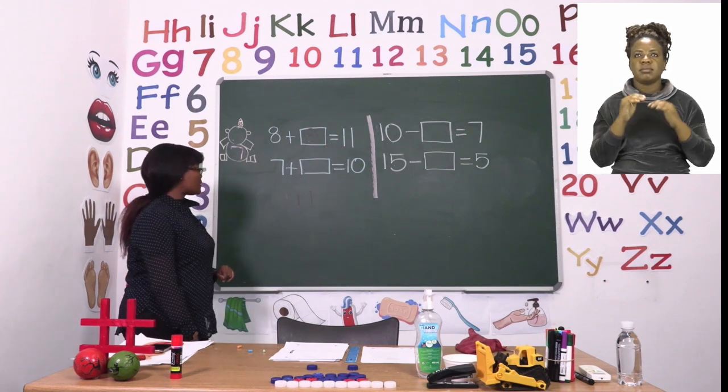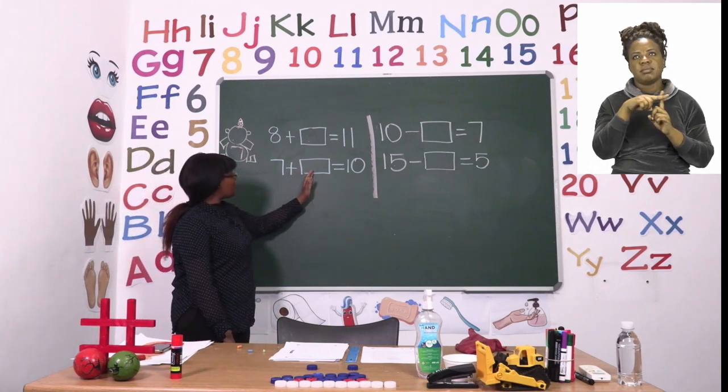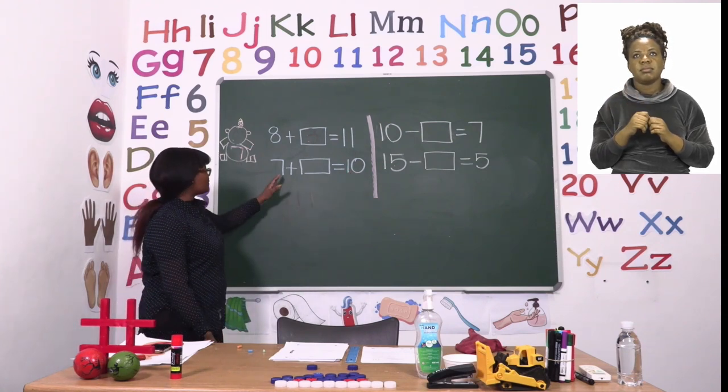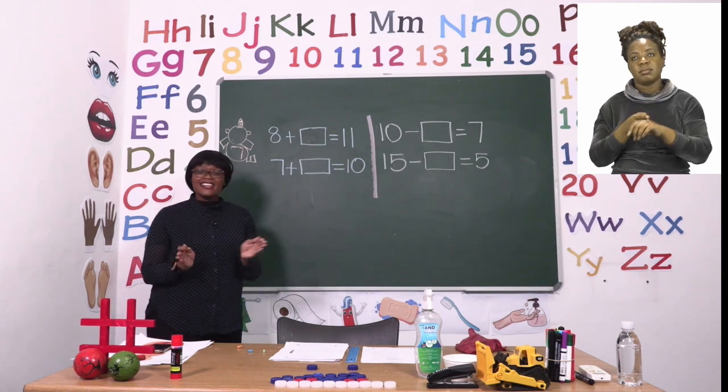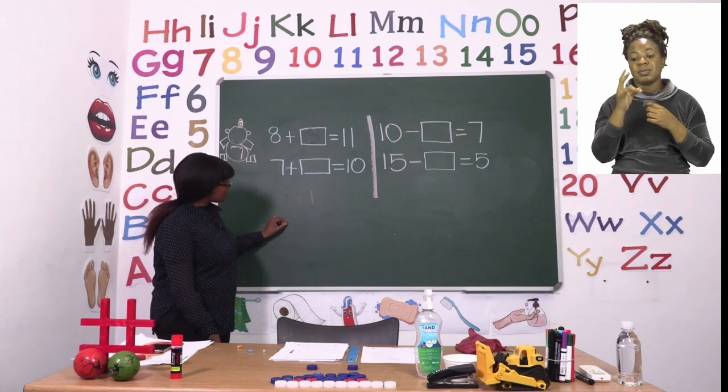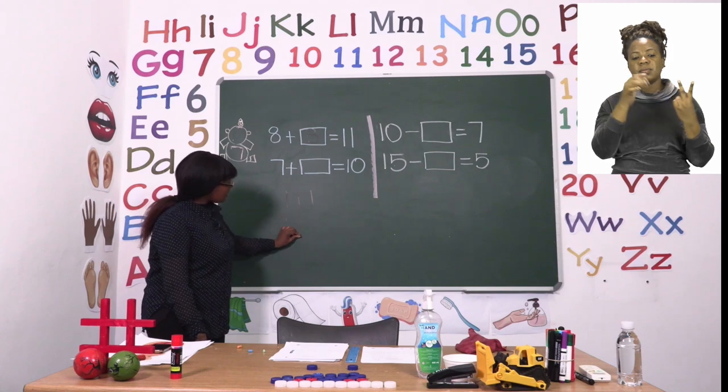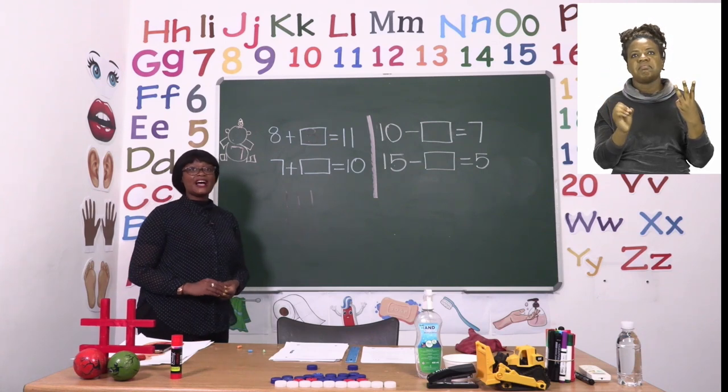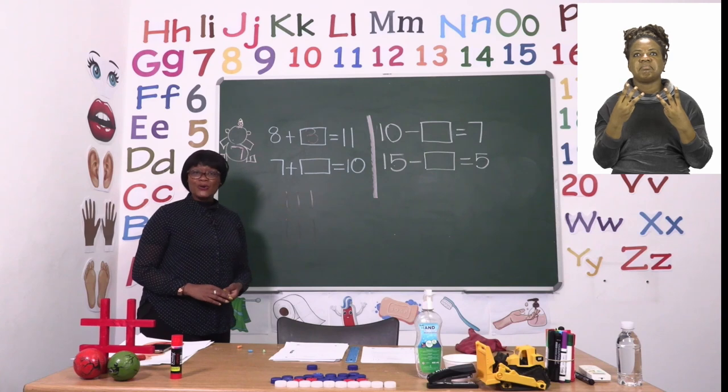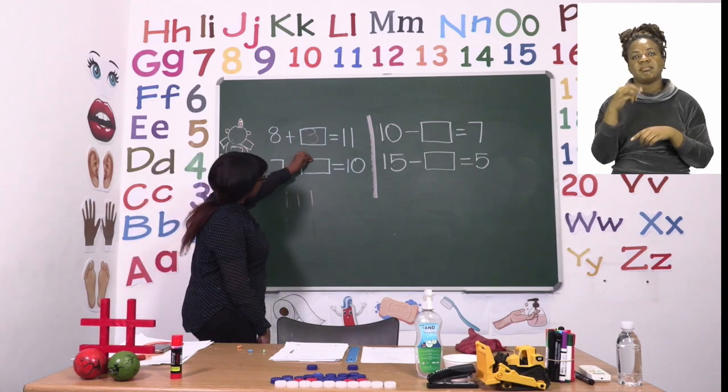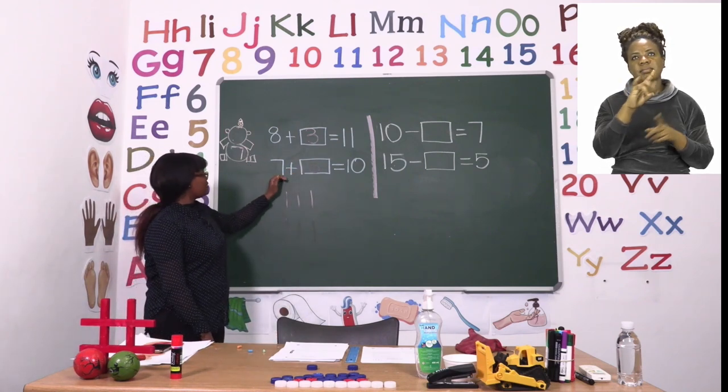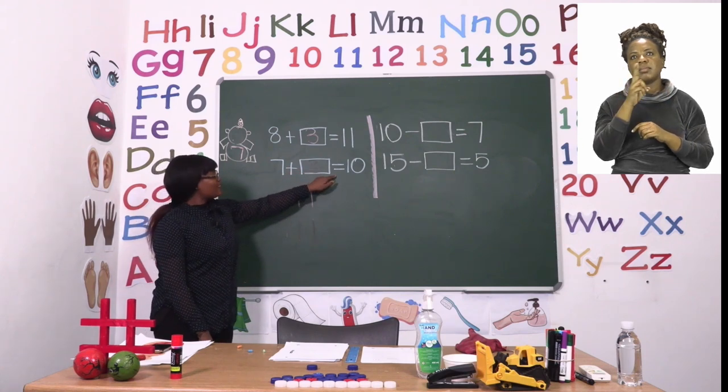Let's now try and do the next one. It says 7 plus box equals 10. So again, what we're going to do is count from 7 all the way to 10. The number that's in between them is the one that is missing. So let us start. 7 is already there, so we're going to say 8, 9, 10. Now we're going to count our sticks. 1, 2, 3. They are also 3. So we're going to write our answer 3. Now our sum is complete. It says 7 plus 3 equals 10.